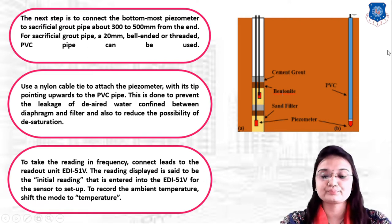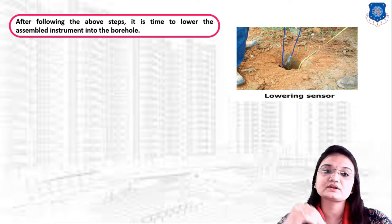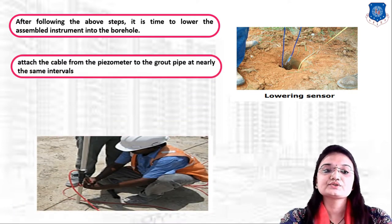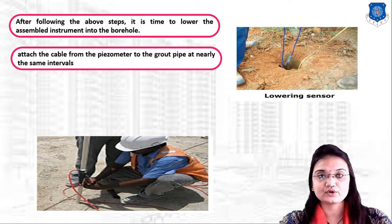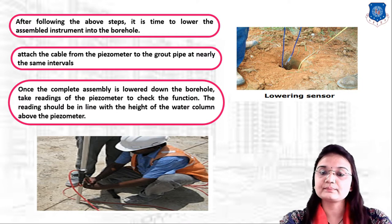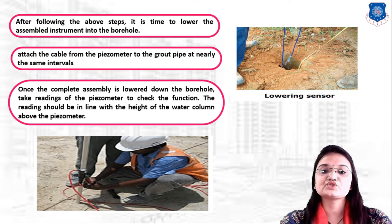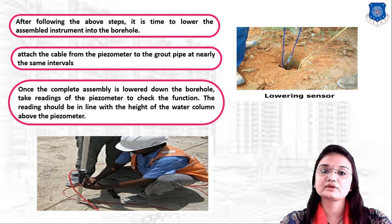After following the above steps, lower the instrument into the borehole. Attach the cable from the piezometer to the grout pipe at nearly the same intervals. Once the complete assembly is lowered into the borehole, take a reading to confirm the piezometer is functioning. The reading should be in line with the height of the water column above the piezometer.